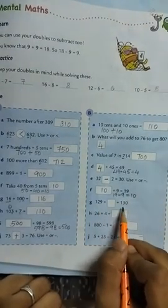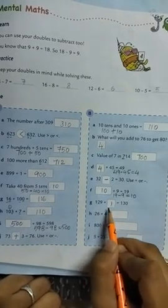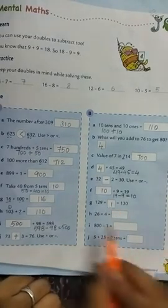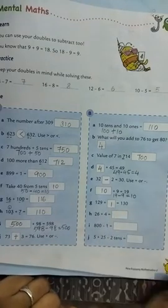129 plus dash is equal to 130. So 129 plus 1 is 130.